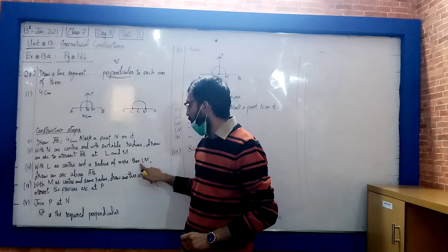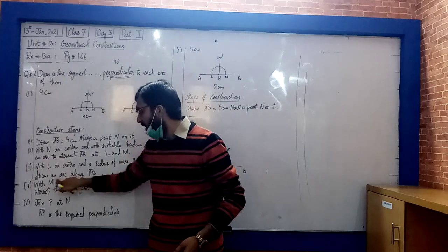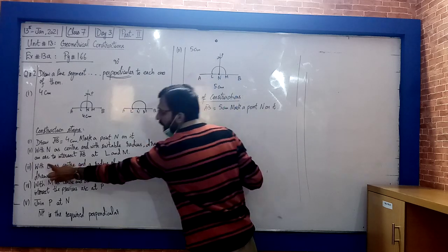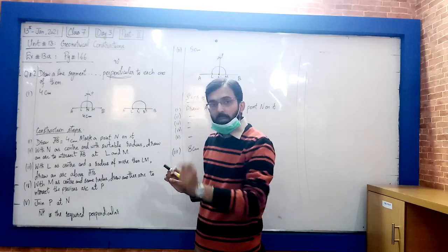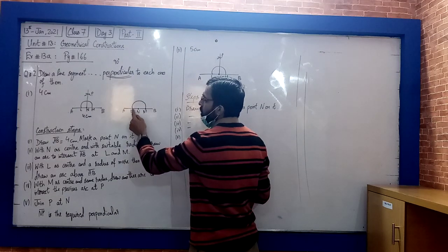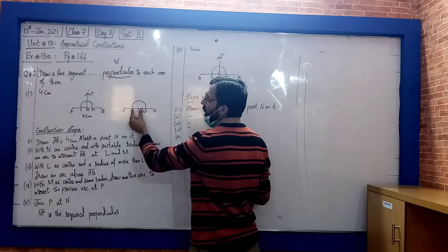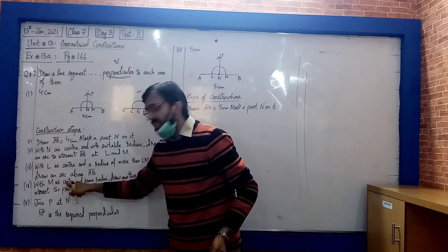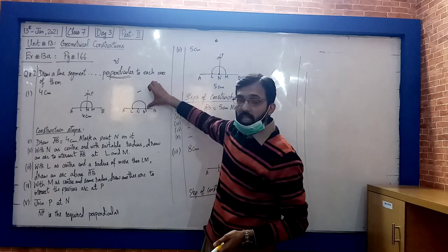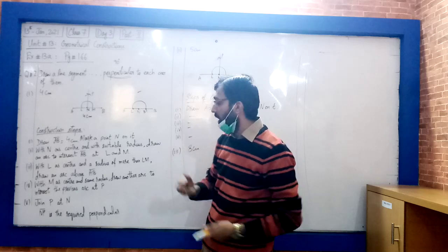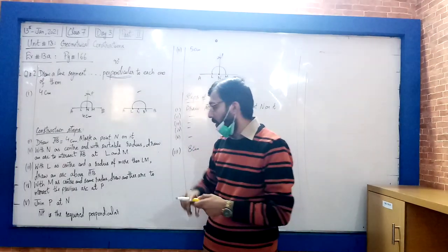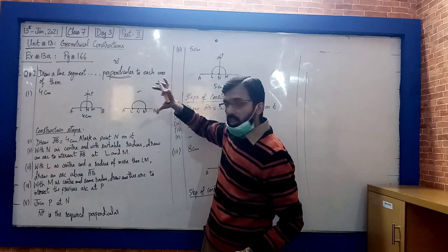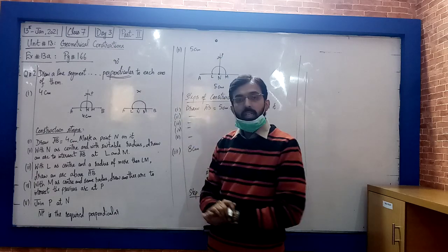With N as center, L as center, the radius is more than LM. With L as center and with M as center, draw arcs in the upper half above AB line. The arcs will intersect to form point P.